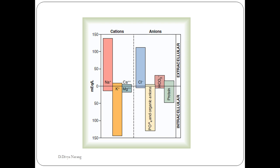An important clinical implication: if you receive a hemolyzed sample in the lab — the serum appears reddish because RBCs have lysed and released their intracellular contents — you would not want to analyze and report potassium and phosphate, as they will give spuriously high values because the intracellular content has already been released into the serum.